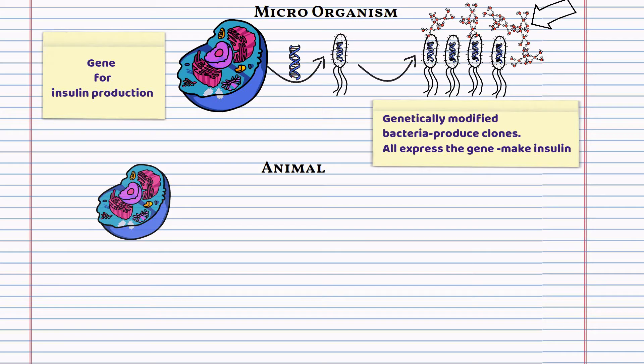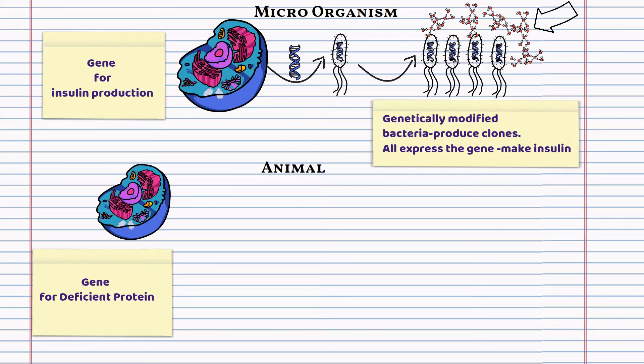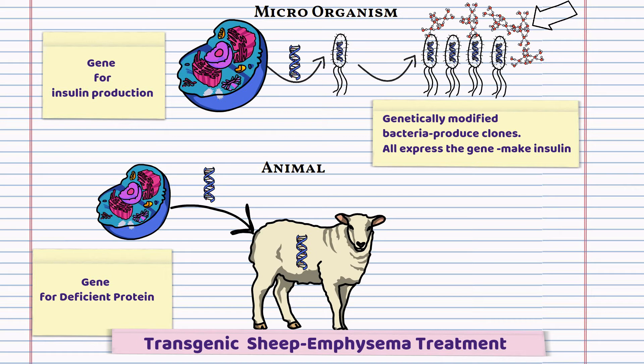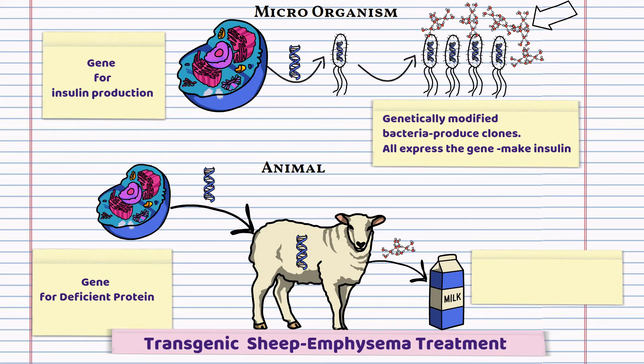Let's take a look at genetic engineering using animals. Some people are deficient in this protein known as AAT and it can lead to lots of health conditions. The gene for this protein was isolated and inserted into sheep. The sheep are now termed as being transgenic. The gene is expressed inside the sheep and the product, the protein, comes out in the milk. The protein can then be removed or purified from the milk and is used to treat people with conditions such as emphysema.